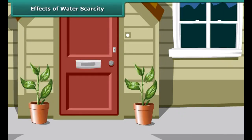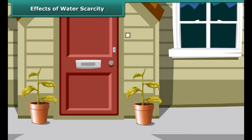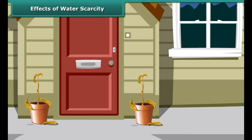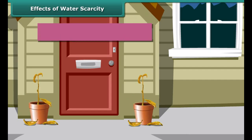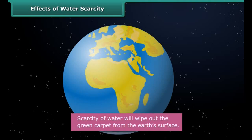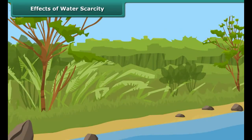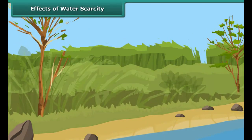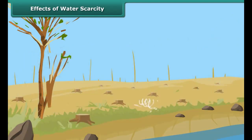Plants need water to get nutrients from the soil and prepare their food. Non-availability of water causes them to wilt and ultimately die. Scarcity of water will wipe out the green carpet from the earth's surface, resulting in less rainfall and reduced oxygen supply. Loss of plants and trees also means loss of food. Thus, prolonged scarcity of water will make survival of every life form impossible on earth.